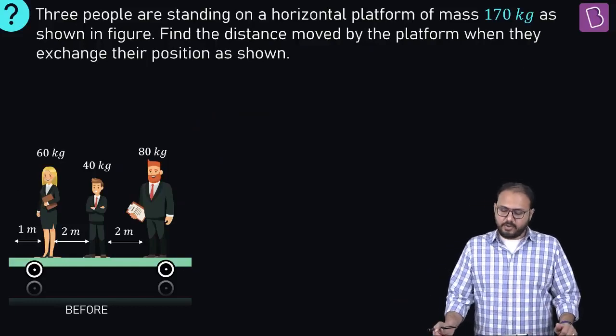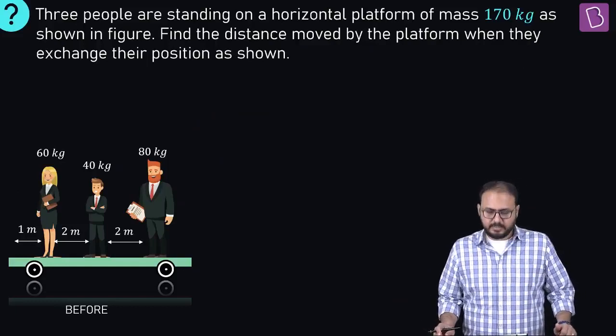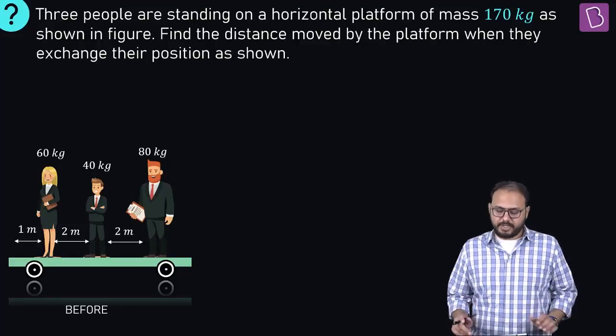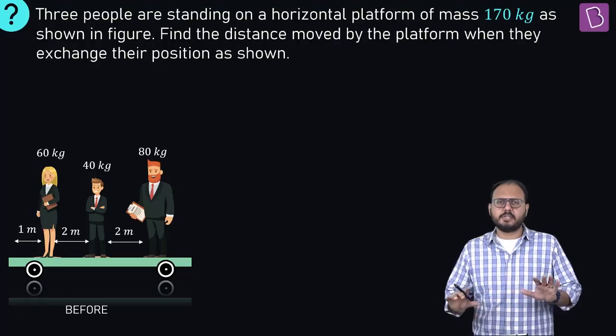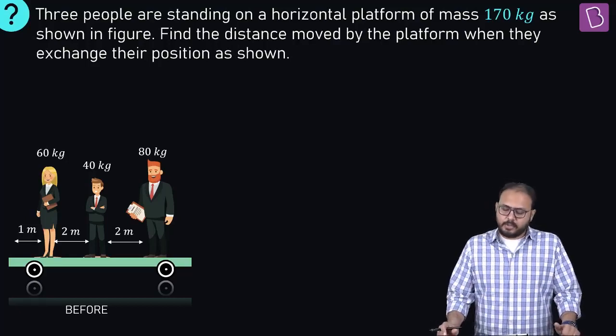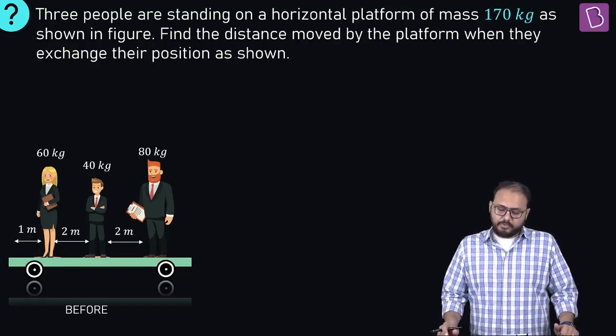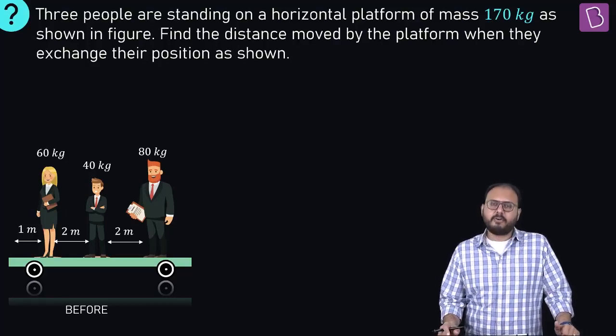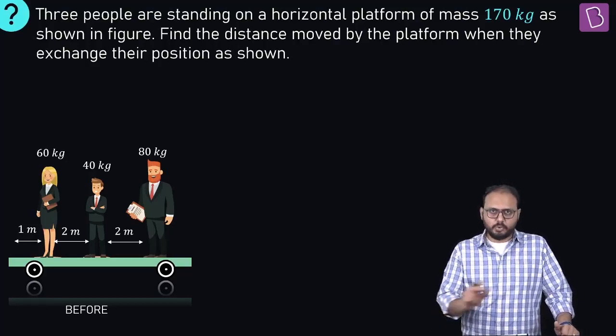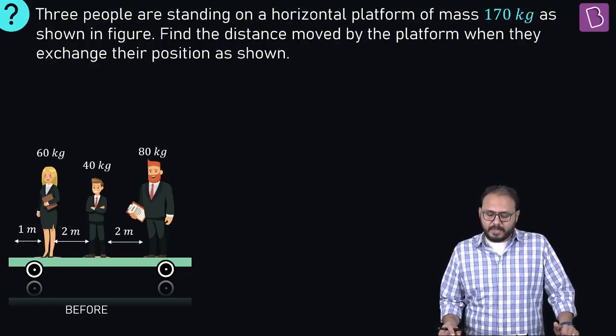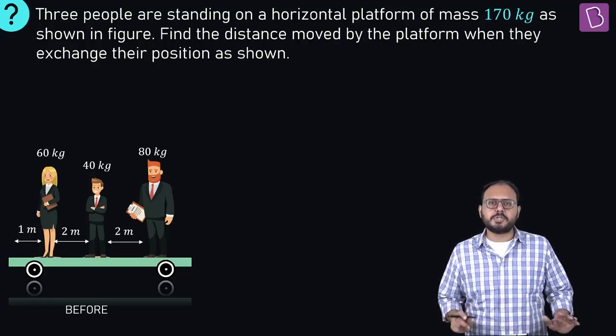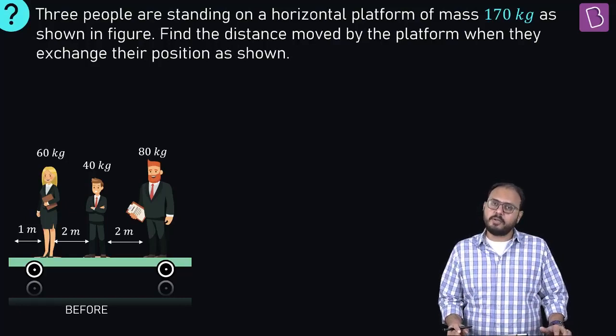Three people are standing on a horizontal platform on a frictionless surface. They're standing on a nice roller. The platform mass is 170 kg. Find the distance moved by the platform when they exchange their position as shown.